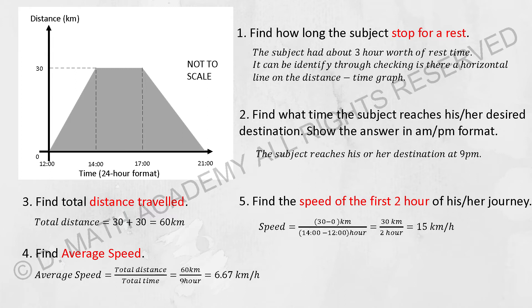Find what time the subject reaches his desired destination. Show the answer in AM/PM format. This is the most common question asked for this topic. All you need to do is find where the last stop is at, which is 21:00. This is in 24-hour format, and after conversion, 21:00 is equivalent to 9 PM.